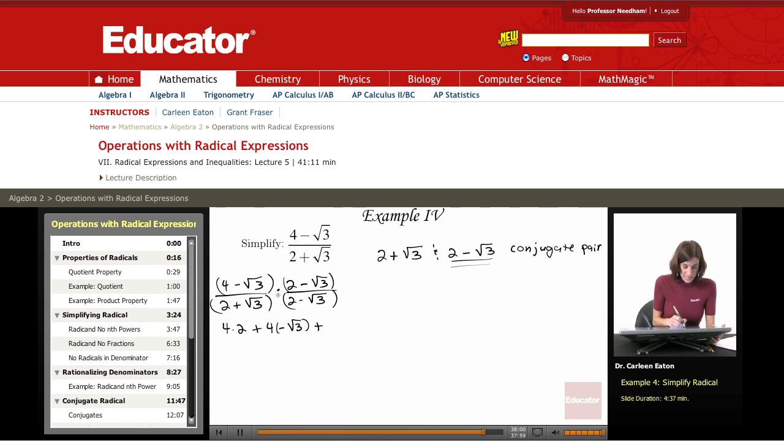The inner two terms, that's negative square root of 3 times 2. And then the last two terms. Negative root 3 times negative root 3.